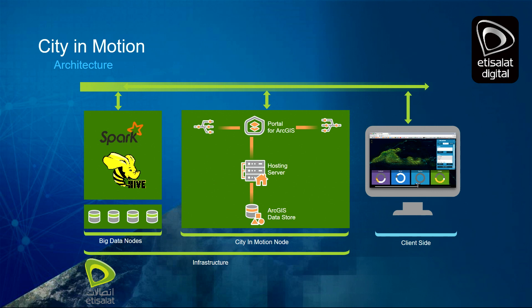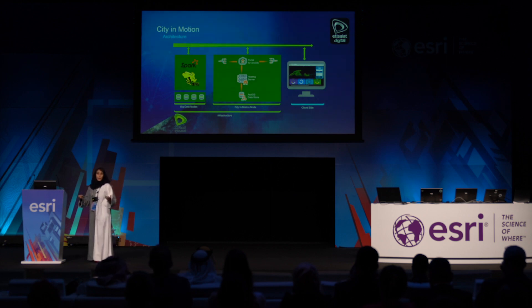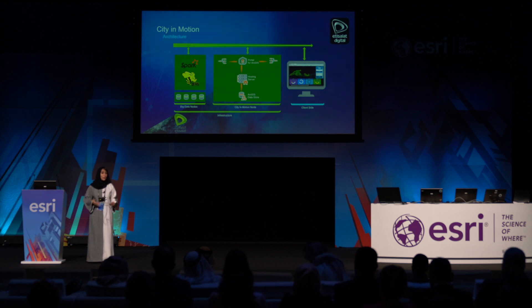We use Spark in order to digest and handle all of the live data history. We also use Hadoop and Hive to manipulate and handle the requirements of the huge volume of data we are crunching. And we use Esri as the GIS map layer to put all of that data into an interactive map so that whoever sits behind the tool can take decisions based on what they see.